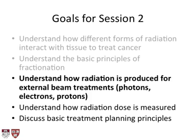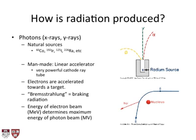How is radiation produced for external beam treatments? Photons can be X-rays from man-made sources or gamma rays from natural sources like cobalt, iridium, iodine, and radium. Linear accelerators produce X-rays. Bremsstrahlung or breaking radiation is produced when electrons accelerated to high speed pass by a nucleus — the electron bends and a photon is produced. This is proportional to the energy of the electron and how much it bends. Linear accelerators produce high-energy photons this way, as do diagnostic X-ray tubes. Old cathode ray TVs worked similarly but at energies too low to ionize.